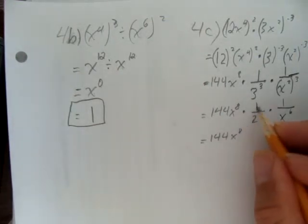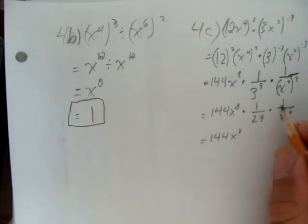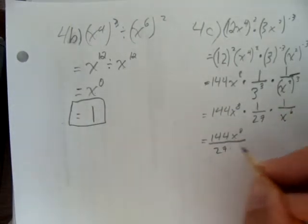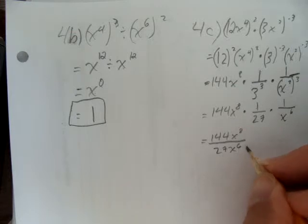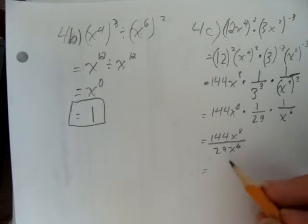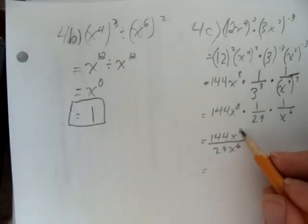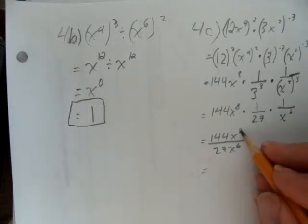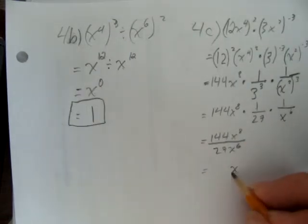So I have 144x to the power of 8 times 1 times 1 that's everything on the top, now everything on the bottom 27 times x to the power of 6. We're not quite done yet because we have to simplify. First thing I'll do is say look, x to the power of 8 divided by x to the power of 6 that's easy, just subtract 8 take away 6 I get x squared.